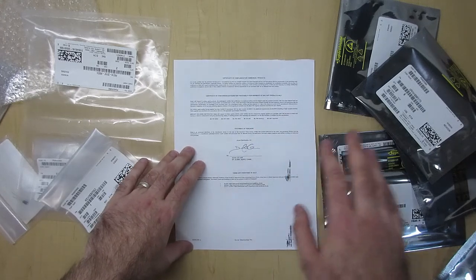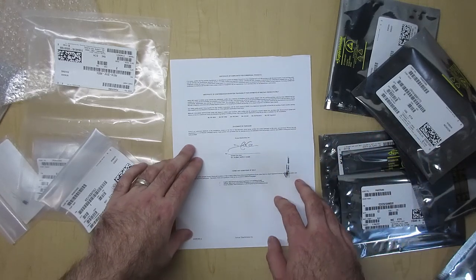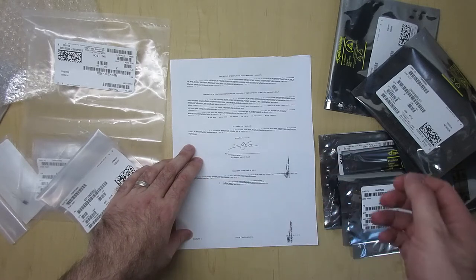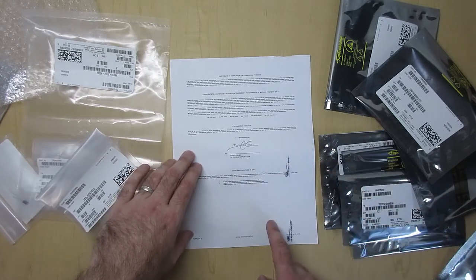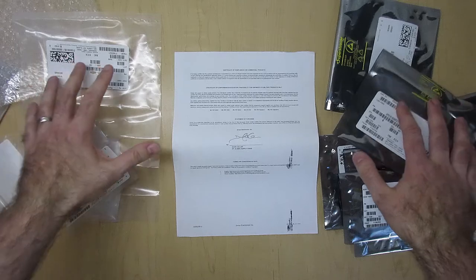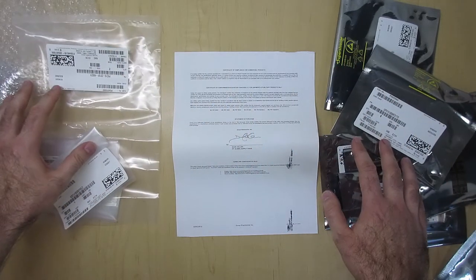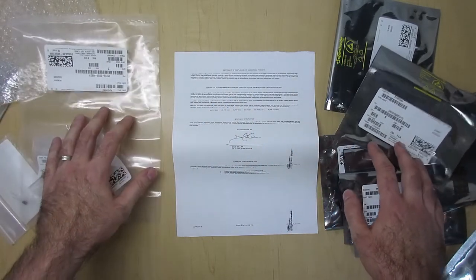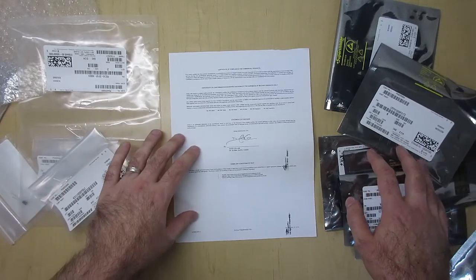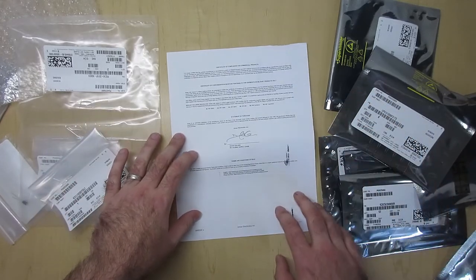So Arrow is doing the right thing here. They're protecting themselves from any type of failure that could happen from when the component arrives at their warehouse to when it gets to you. So yes, it's kind of wasteful that we have all these packaging materials here, but at the same time it's also bad for business if we don't take precautions to protect sensitive components in transit.